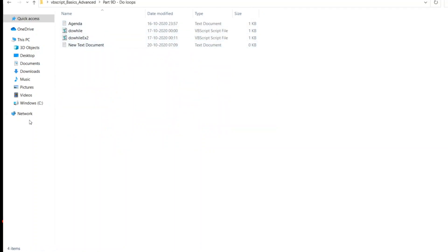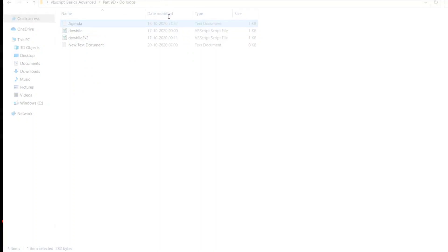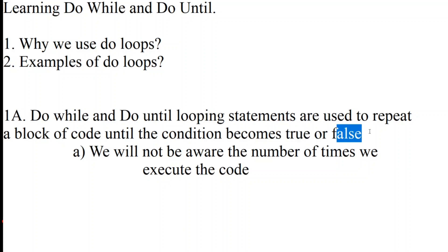We have already seen the agenda: learning do-while and do-until loops. The basic definition of do loops is to execute the block of code until the condition becomes true or false — true in the case of do-while and false in the case of do-until. The main point to note here is that you will not be aware of how many times the code will be executed, unlike for loops where it is certain from one limit to another.